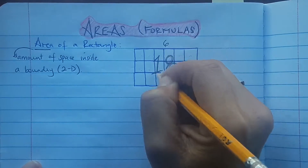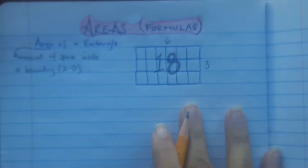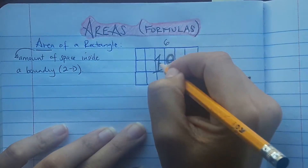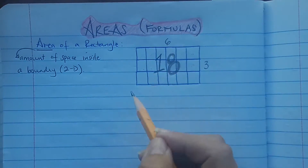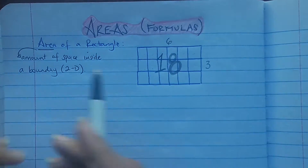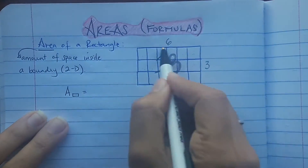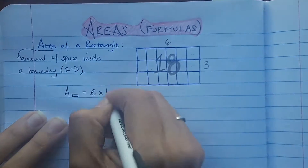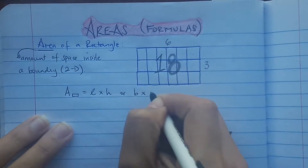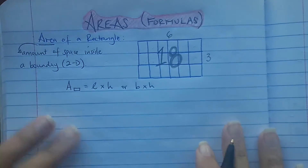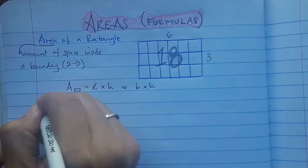But no one has time to sit here and count each individual unit, so a faster way to get the area would be to multiply the length and the height, or the base and the height. So the area of any rectangle is the length times height — more commonly, base times height — because six times three gives you 18.